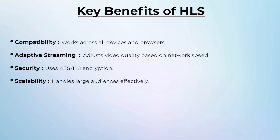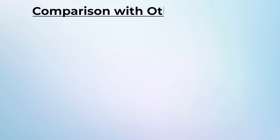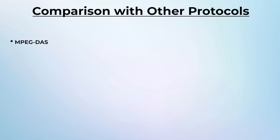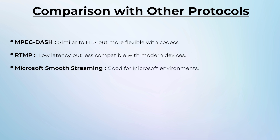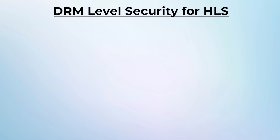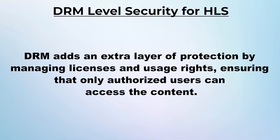Comparison with other protocols: MPEG-DASH is similar to HLS but more flexible with codecs. RTMP offers low latency but is less compatible with modern devices. Microsoft Smooth Streaming is good for Microsoft environments. HDS is similar to HLS but less common.